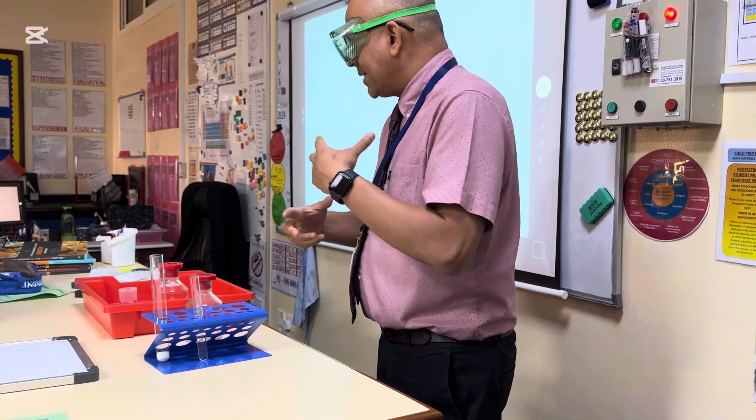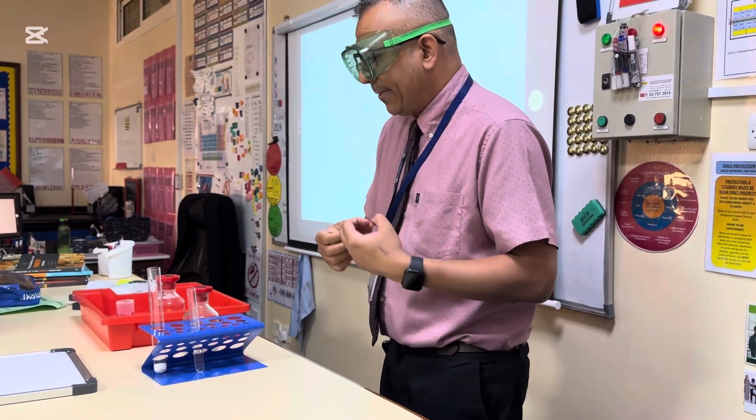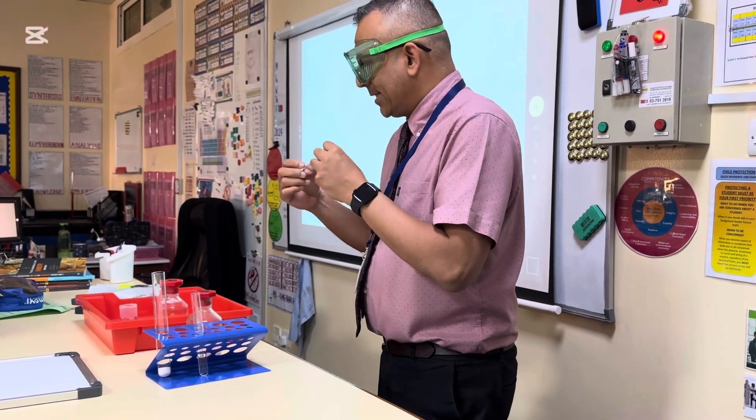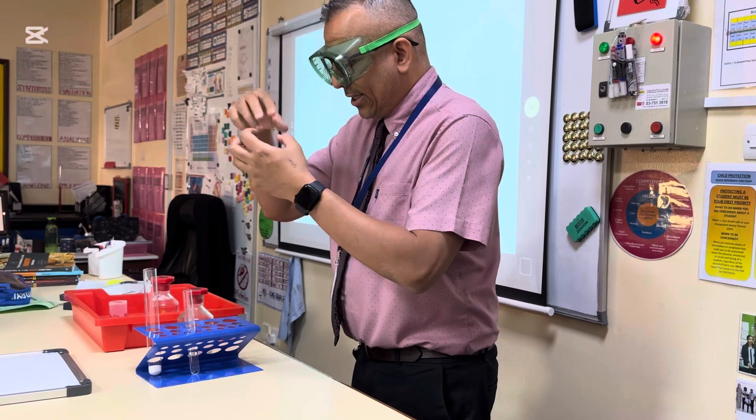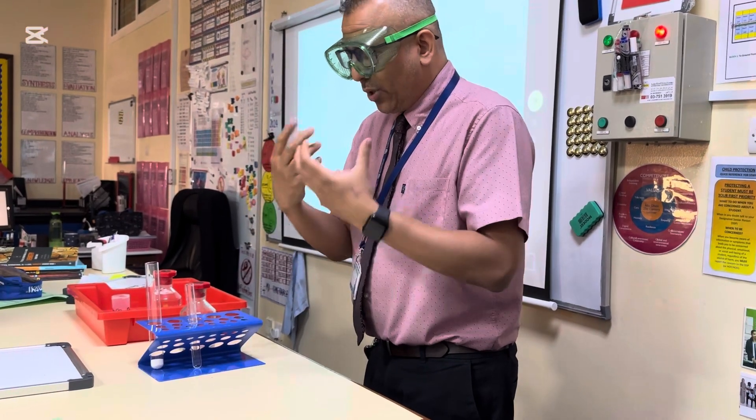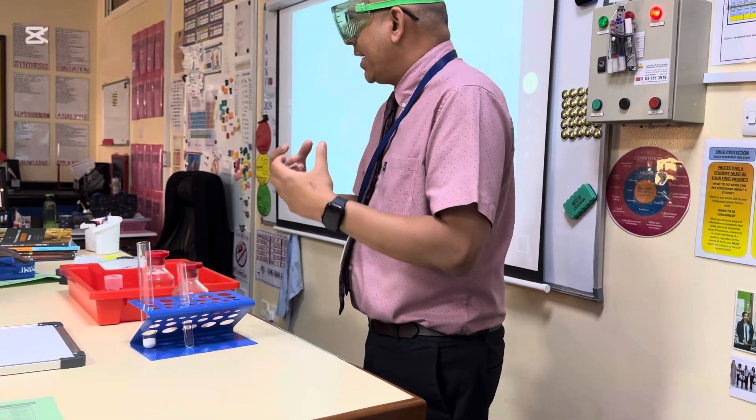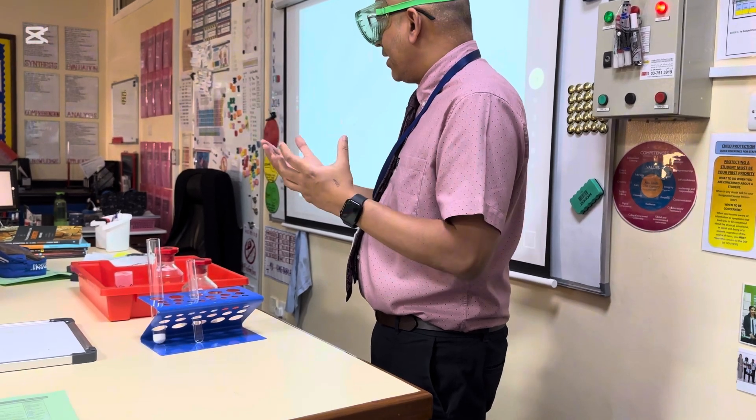it should come up as a milky, cloudy, white precipitate. So the cloudiness forms because there is a white substance that forms, it's a white solid that forms within the solution and it can't dissolve. So it makes it cloudy.